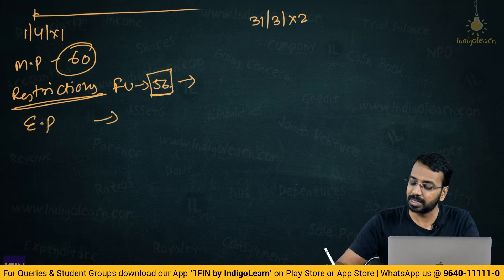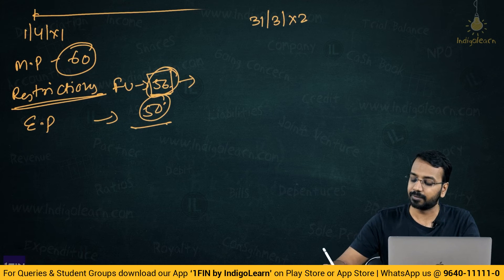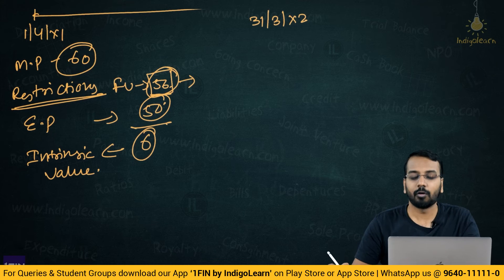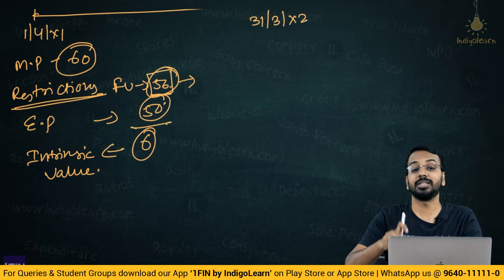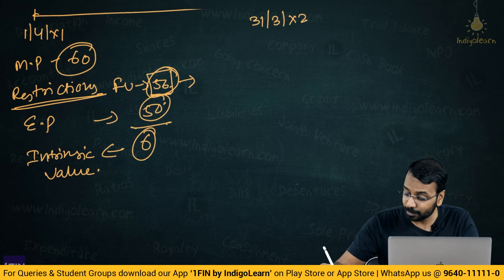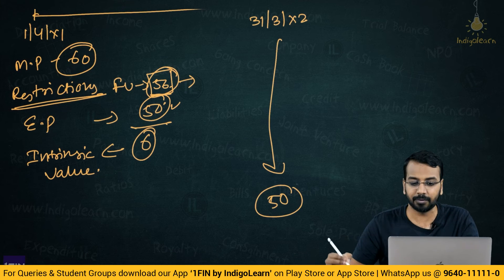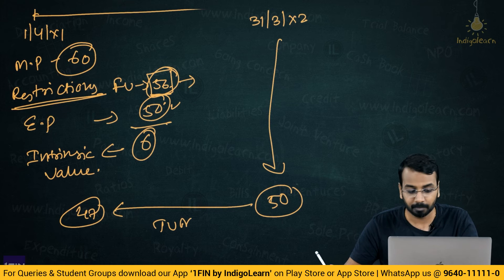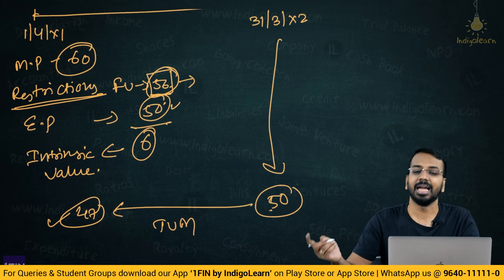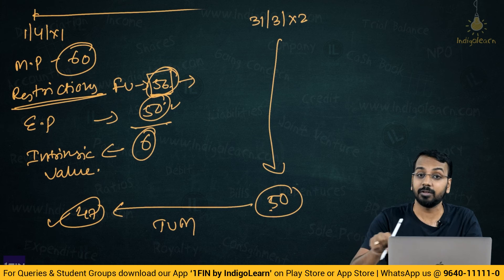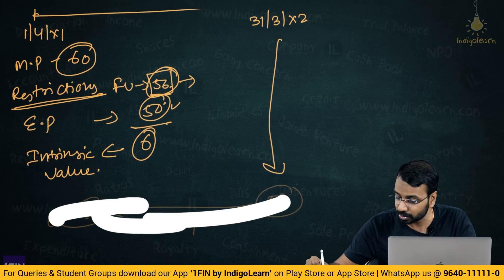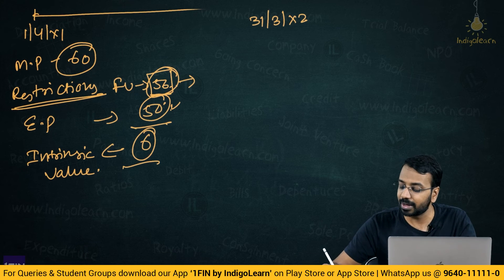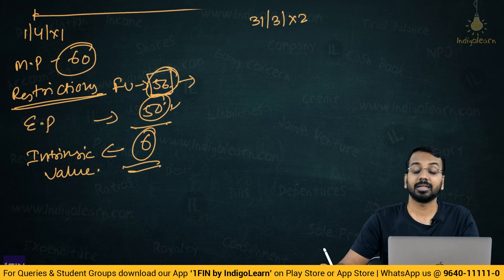The exercise price is ₹50 and the fair value of the share is ₹56, so the fair value of the option is ₹56 − ₹50 = ₹6. The restriction reduces the share's value from the market price of ₹60 to ₹56 — similar to how restrictions on land reduce its value. The fair value of the option, ₹6, will be used to calculate employee compensation expense. The question also states the fair value per option worked out to ₹6.